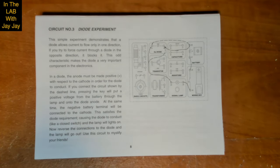This simple experiment demonstrates that a diode allows current to flow in only one direction. If you try to force current through a diode in the opposite direction, it blocks it. This odd characteristic makes the diode a very important component in electronics. In a diode, the anode must be made positive with respect to the cathode in order for the diode to conduct.